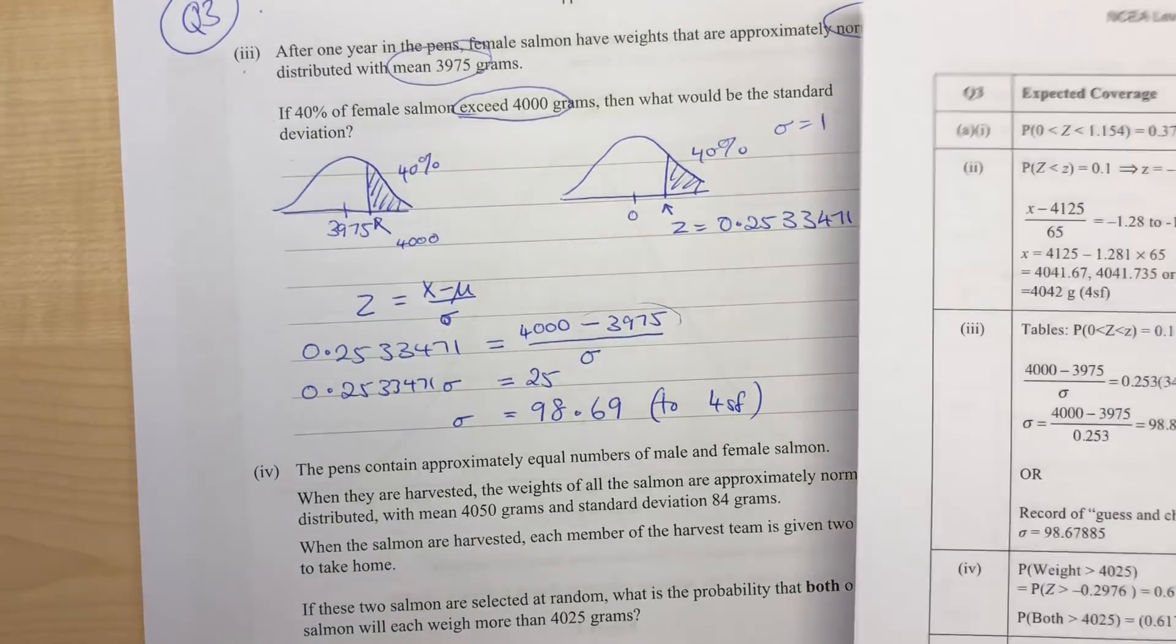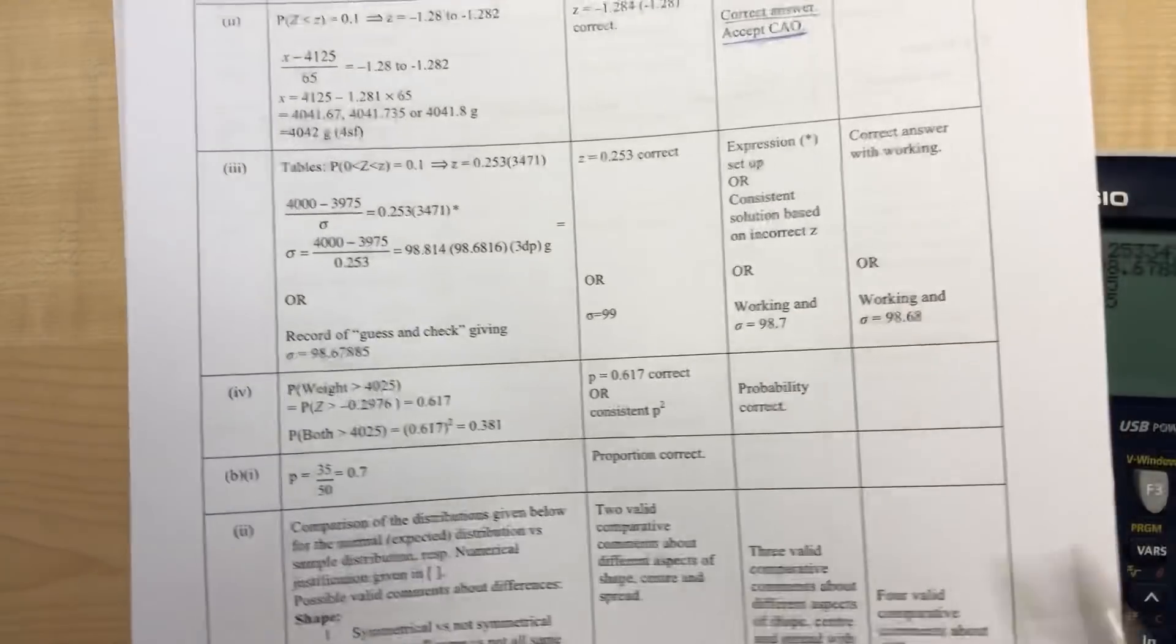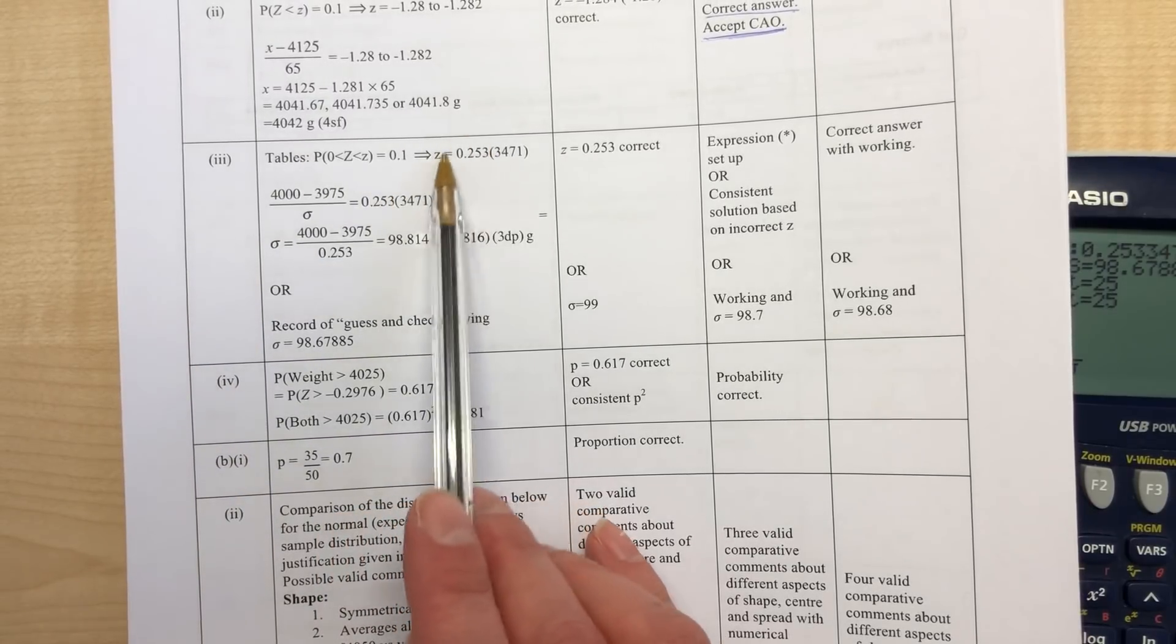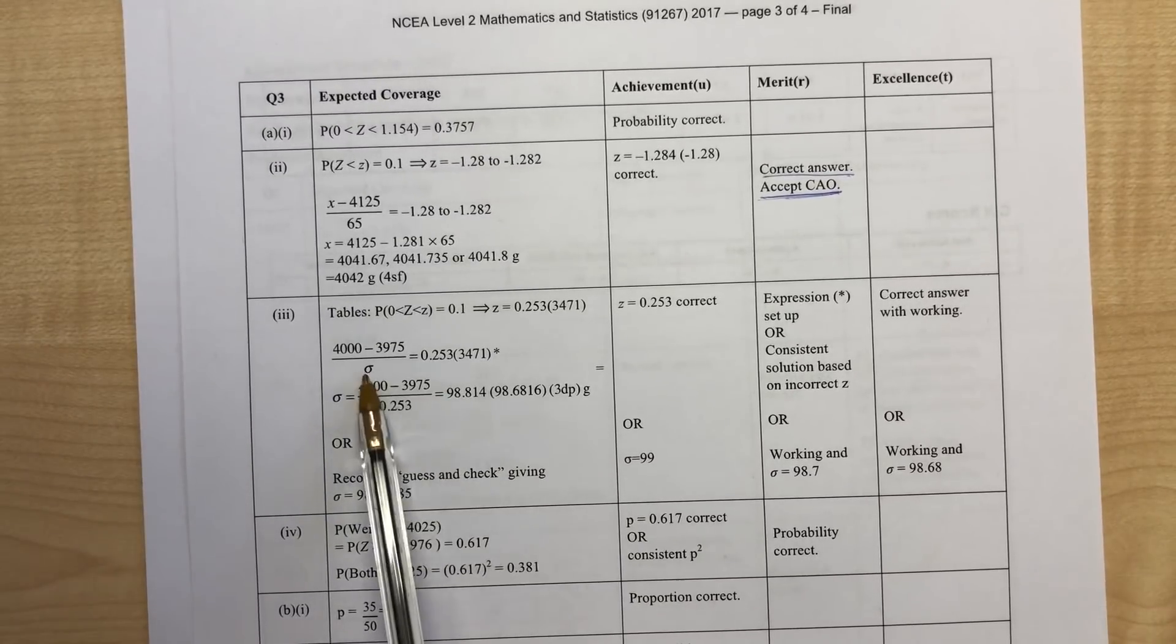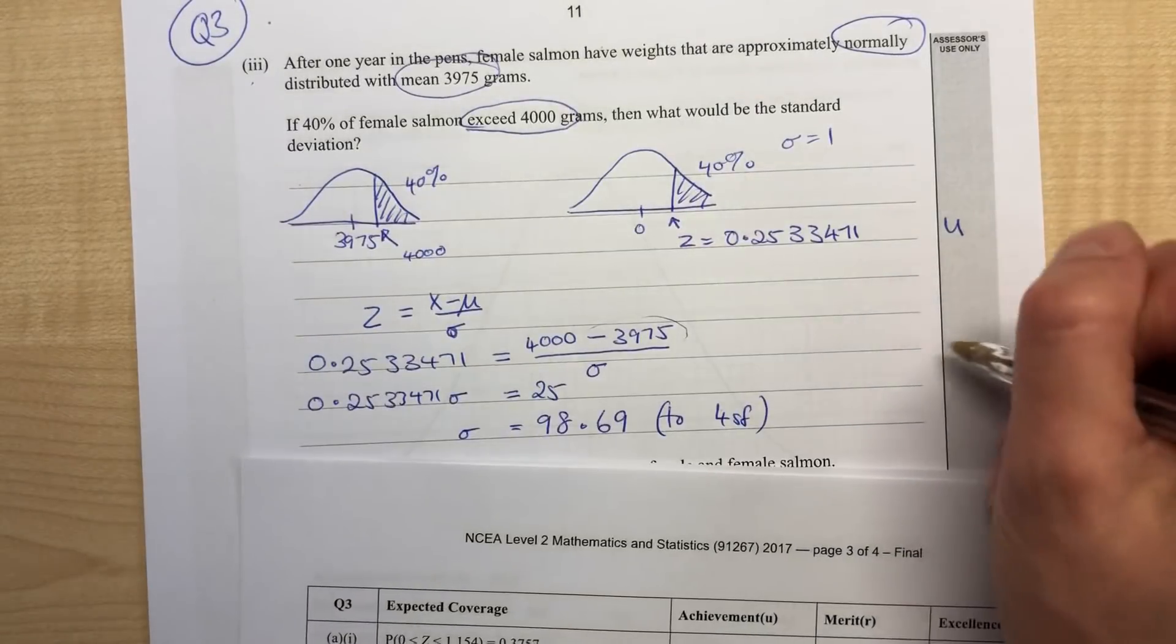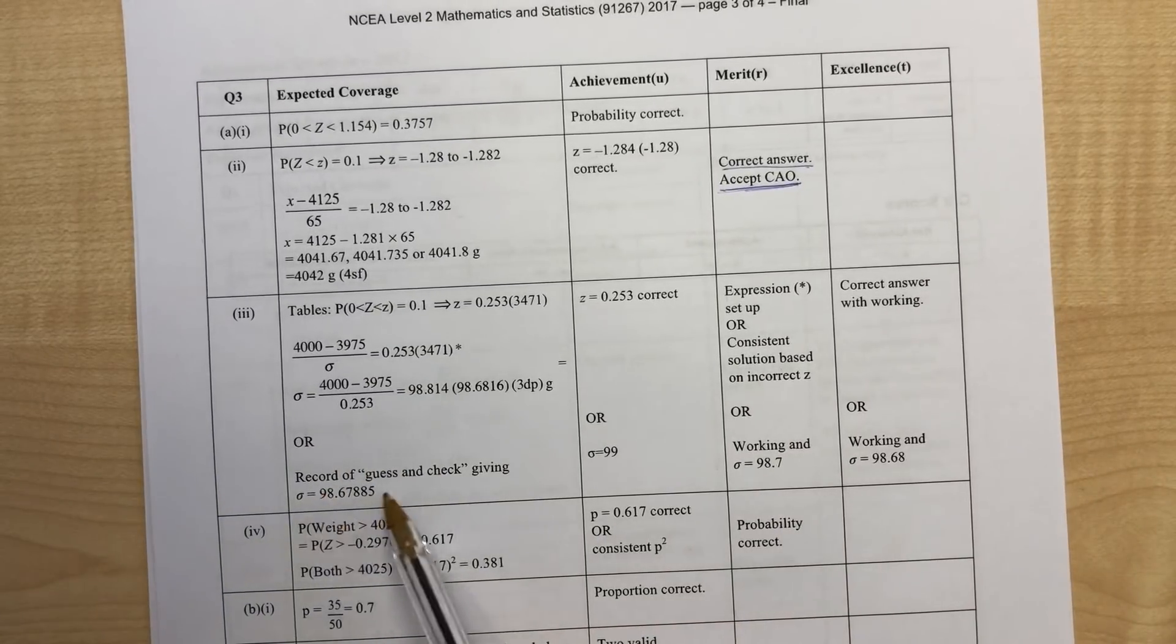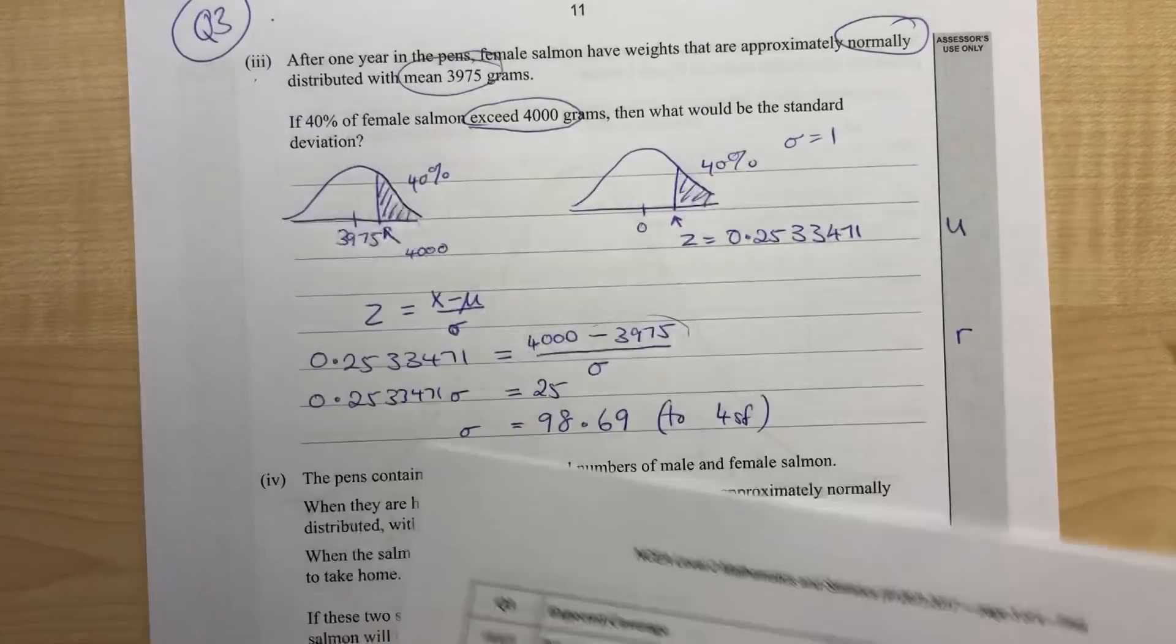Now checking the mark scheme for that one. Part 3: if we got to the point of working out that z value, that got us a u, an achieved point. If we can set up our expression like this, that gets us a merit point, an r.